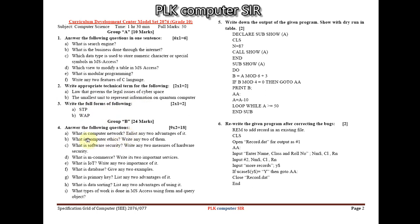Short answer questions (Group B, a to e) from Computer Fundamentals include: 'What is a computer network? List any two advantages,' 'What is computer ethics? Write any two,' 'What is software security? Write any two measures of hardware security,' 'What is M-commerce? Write its two important services,' and 'What is IoT? Write any two importances.' These five questions are from Computer Fundamentals.